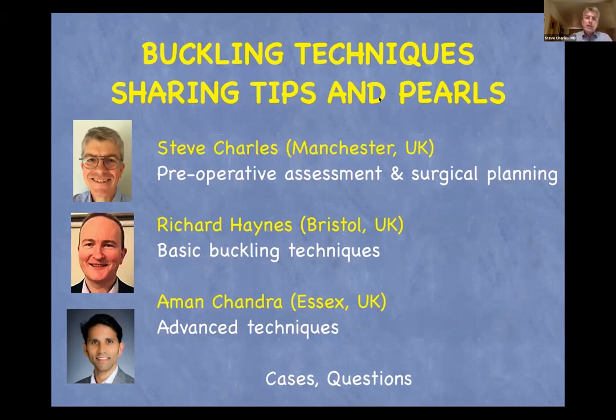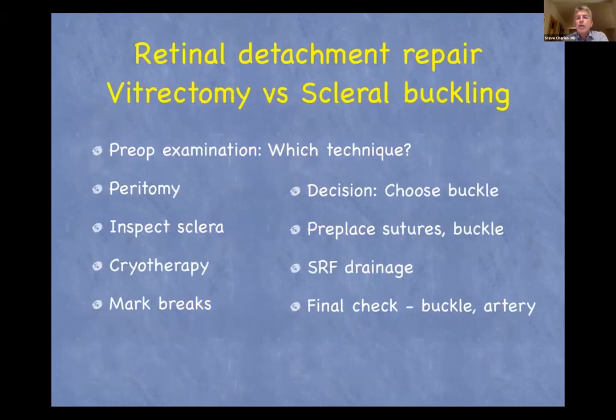We're going to go through retinal detachment repair and how you might fix it, with a particular emphasis on scleral buckling surgery. We need to make up our minds: are we going to do a vitrectomy, which is clearly the commonest technique, or might we use scleral buckling? We'll be talking about the pre-operative examination to decide which technique to use, then going through how to do the surgery in a step-wise way.